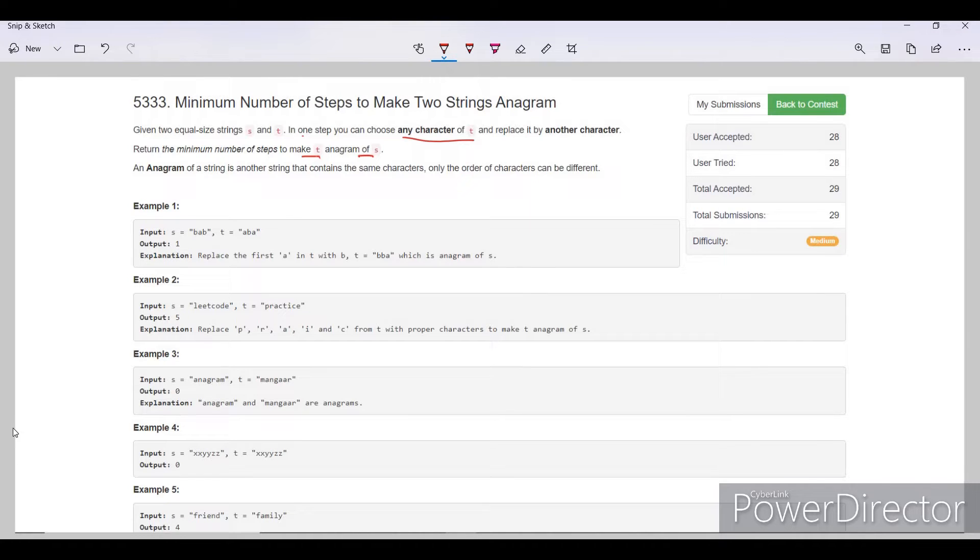So what are anagrams? An anagram of a string is another string that contains the same characters, only the order of the characters can be different.